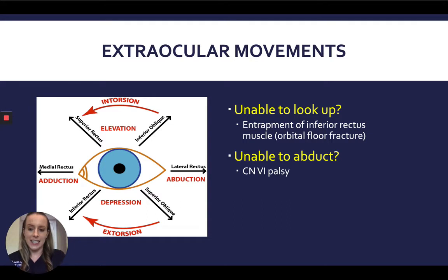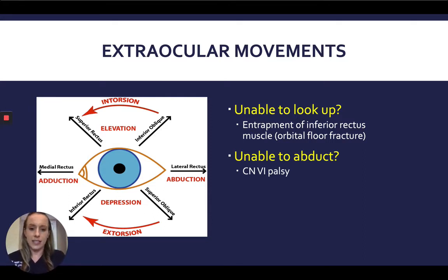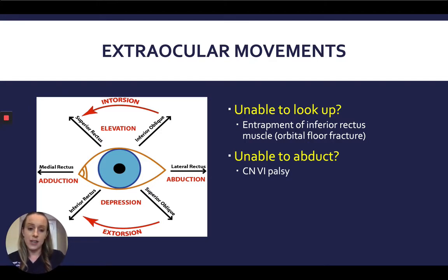The next vital sign to check is extraocular movements. Make sure the patient can fully look up, down, to the left, and to the right. This diagram goes through the muscles that control these movements and what to consider if the patient lacks full extraocular movements. For example, if a patient can't look fully up with one eye, consider whether the inferior rectus muscle is entrapped — common in orbital floor fractures seen in trauma patients. If the patient can't fully abduct their eye, consider a cranial nerve six palsy.